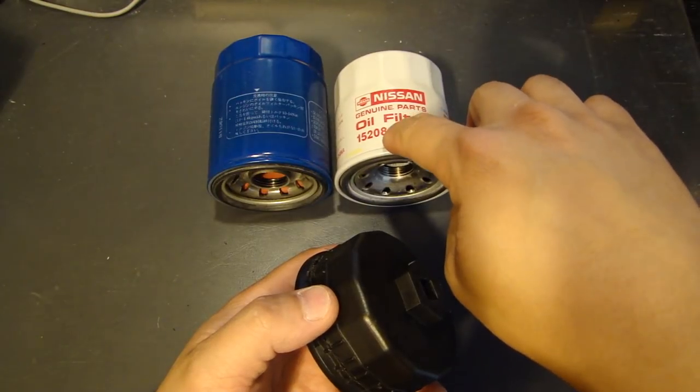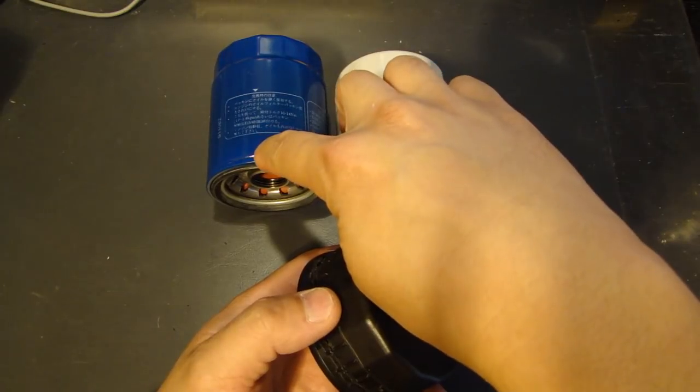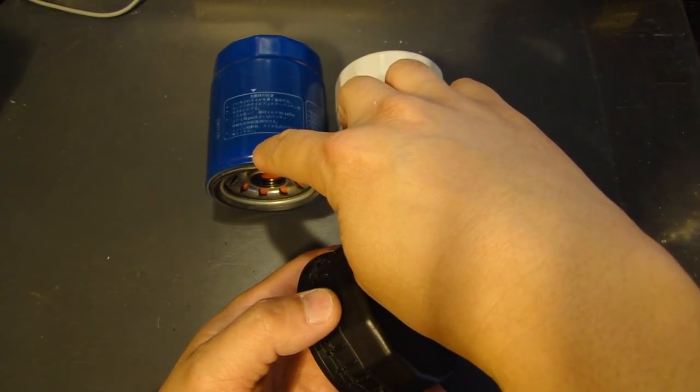The reason being the Nissan filter actually requires a 63 millimeter, and the Honda filter requires a 64 millimeter.